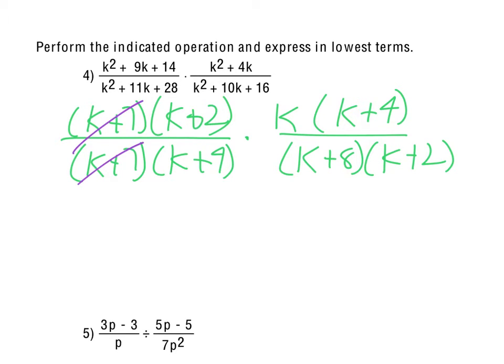Now, like I said, we can cancel out the k plus 7's, cancel out the k plus 4's, also cancel out the k plus 2's. So we would be left with just the k over k plus 8.